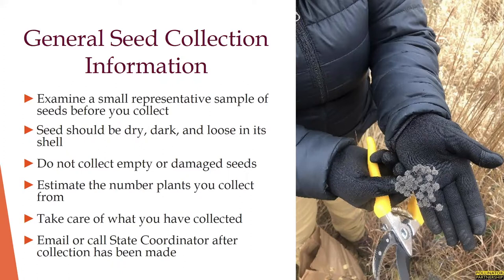Once you begin the seed collection process, you'll need to carefully examine a small representative sample of seeds to make sure that they have a fully developed embryo. You can cut the seeds open with a knife and examine them with a hand lens, or use nail clippers in the field to be extra certain. In general, seed will be dry, dark, and relatively loose in its shell if it's ripe. You'll want to collect mature dry seeds that are relatively insect-free and put them in brown paper bags. Large collections can be made using plastic buckets and then transferred into bags. If you're unsure if the seed is actually ripe, you can collect twice - a little earlier and a little later - to ensure you've got a good mix of mature seeds.